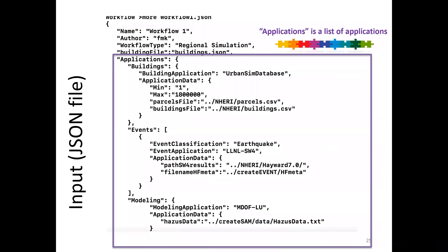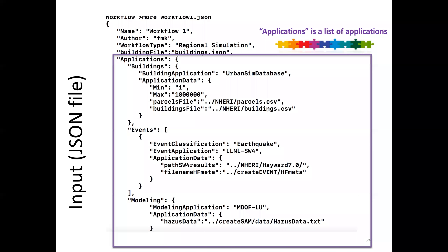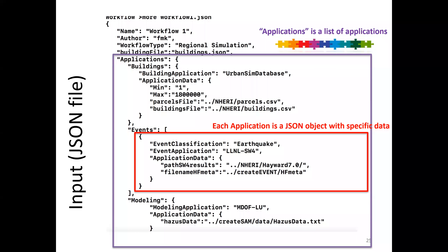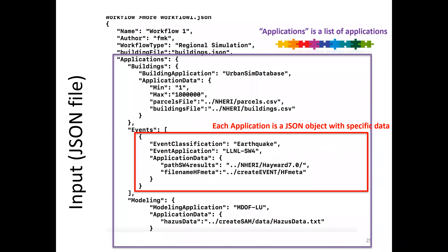The input file is in JSON format. It defines what applications you want to run inside this workflow — we're running multiple applications sequentially. For every specific application, the file contains the inputs and outputs that program needs in addition to what the framework provides — like the little black boxes on top of the jigsaw pieces shown earlier.